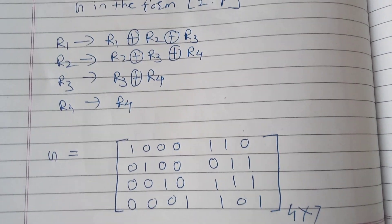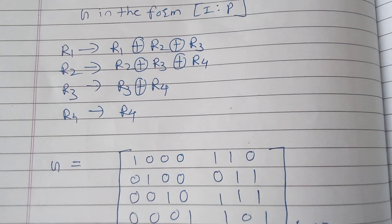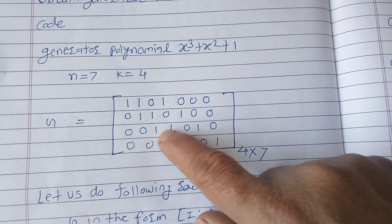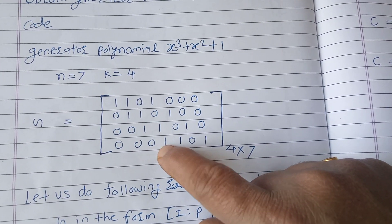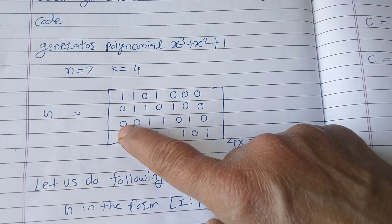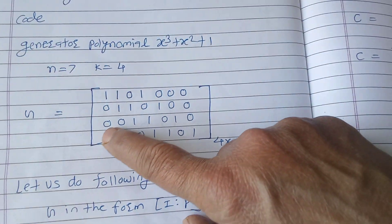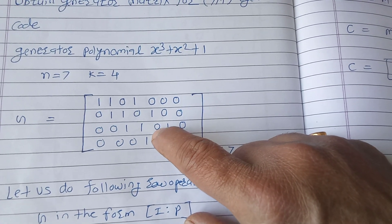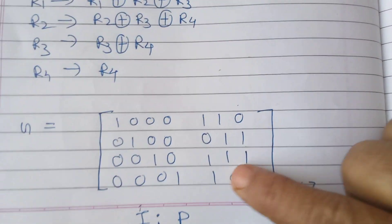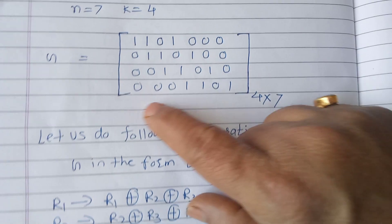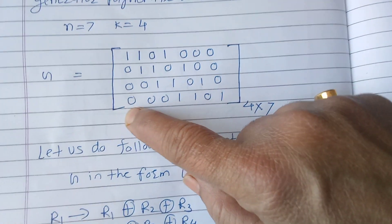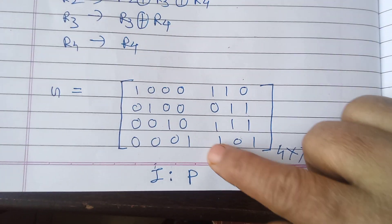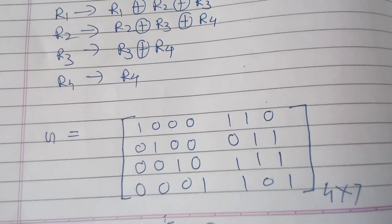Wherever odd ones are present write 1, even ones write 0. For R3, we want 0 0 1 0: adding this row with the row above cancels the unwanted one. Concentrating on those two rows, the XOR gives 0 0 1 0 1 1 1. The last row is already 0 0 0 1 1 0 1, which is already in identity position, so R4 remains as R4.